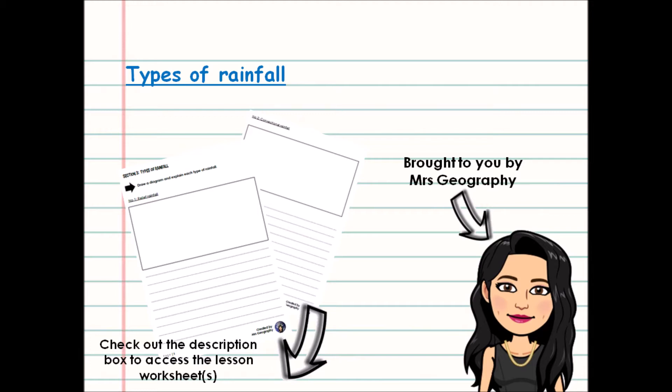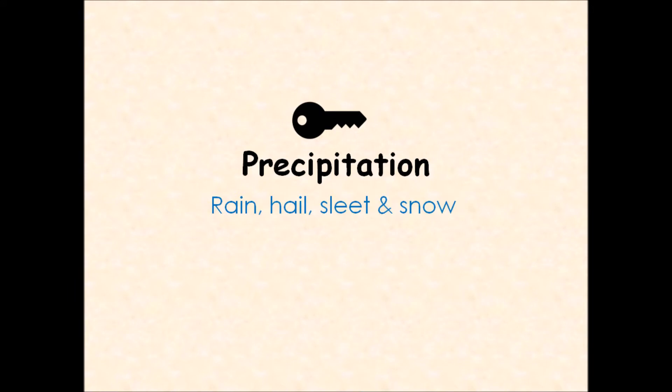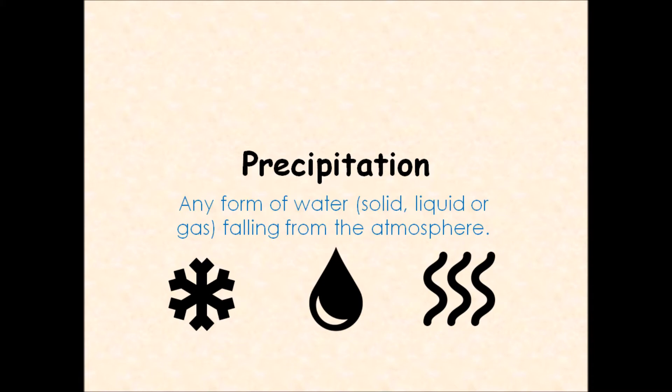So this video is going to focus on types of rainfall. When we think about types of rainfall, we're thinking about what we call precipitation. Precipitation is a geographical word you will need to become familiar with. When we use the word precipitation, we're talking about rain, hail, sleet and snow. Any water that is present in a solid, liquid or a gas that falls from the atmosphere or the sky. Water is present in the atmosphere in any of those three states: as a liquid such as rain, as a solid such as snow and ice, or as an invisible gas which we know as water vapour.